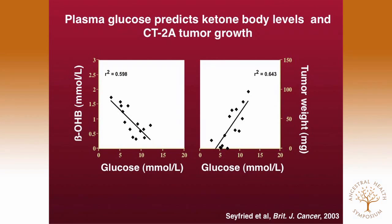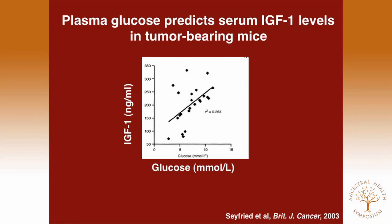We've done linear regression analysis to ask what the drivers are for the whole thing. As glucose levels go down — each one of these is a mouse under a different dietary condition — ketones go up. This is an evolutionarily conserved adaptation. As glucose goes down, tumor weight goes down; the size of the tumors shrink. We've also seen a correlation between glucose and IGF-1, insulin-like growth factor 1, which is a driver of tumor angiogenesis. As glucose goes down, IGF-1 goes down, and the corresponding signaling cascades associated with that hormone go down.